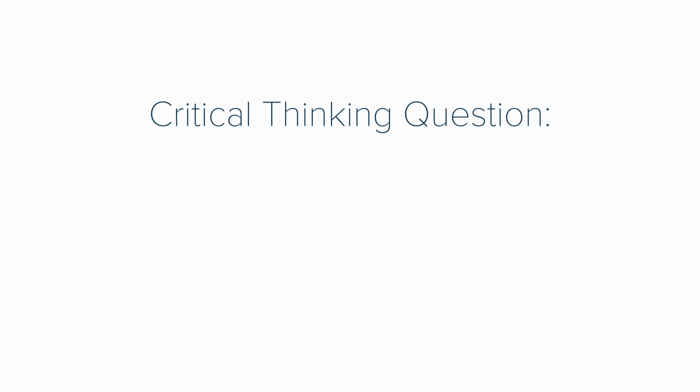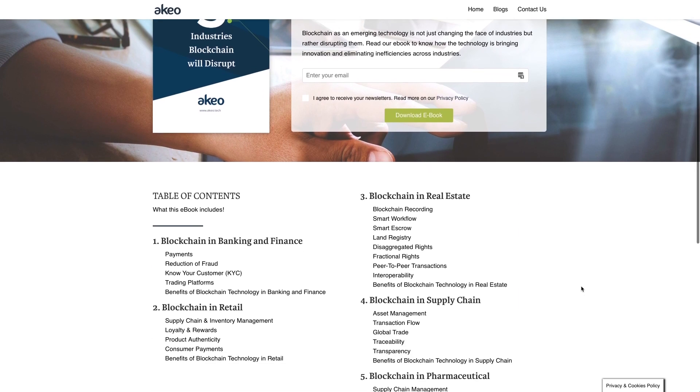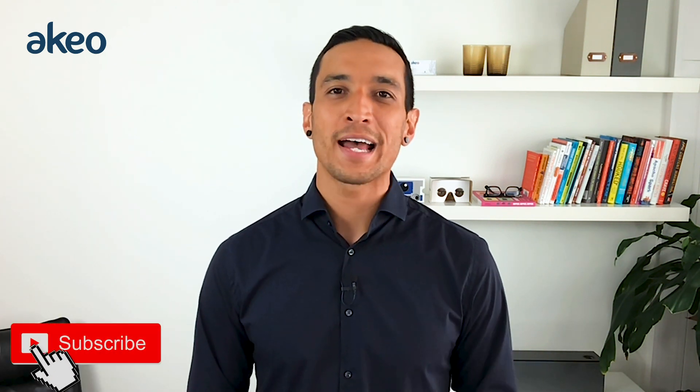Before we wrap this up, here is your critical thinking question for this week — and I already gave the answer earlier in the episode. The Corda network is open for all entities who can run a node and legally identify themselves. Is Corda classified as a public or private distributed ledger? Feel free to start a discussion with us in the comments section, and if you know the answer, please do share it. Are you interested in learning more about how blockchain is being used today and what problems businesses are solving with this technology? Head on over to akao.tech where you can download your free blockchain guide ebook for business professionals. If you're enjoying the content here on the AKO Tech channel, subscribe, like this video, and help us spread this information to others so we can all do our part in helping to assist global blockchain adoption.